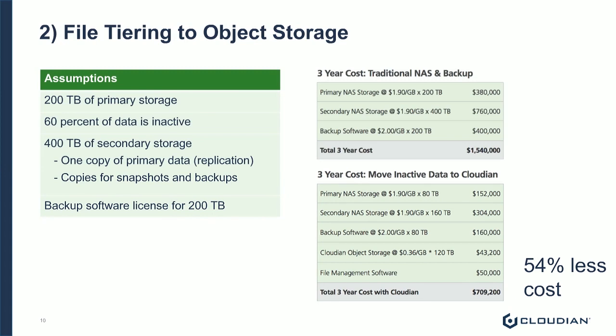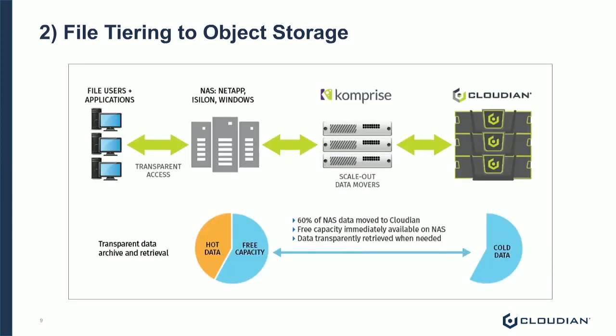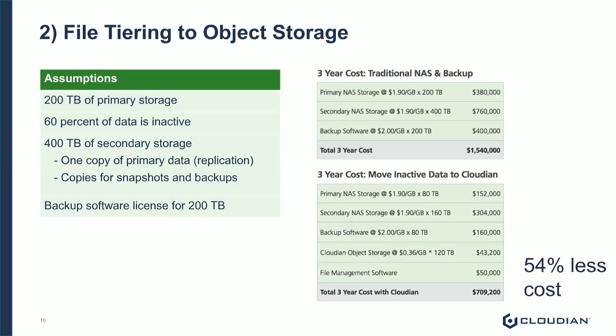This is all built on the S3 API. So when you're looking at solutions like this — the Comprise scenario is one example of a data mover that does this, and there are numerous others. Anything that is capable of moving data to the public cloud is undoubtedly capable of moving it on-prem to Cloudian as well. They're all built on using the S3 API as the communication on the back end. And that's done so people can move the data to the public cloud, but you have the option in every one of those cases of storing it on-prem at less cost, behind your firewall, with different advantages that come with that.